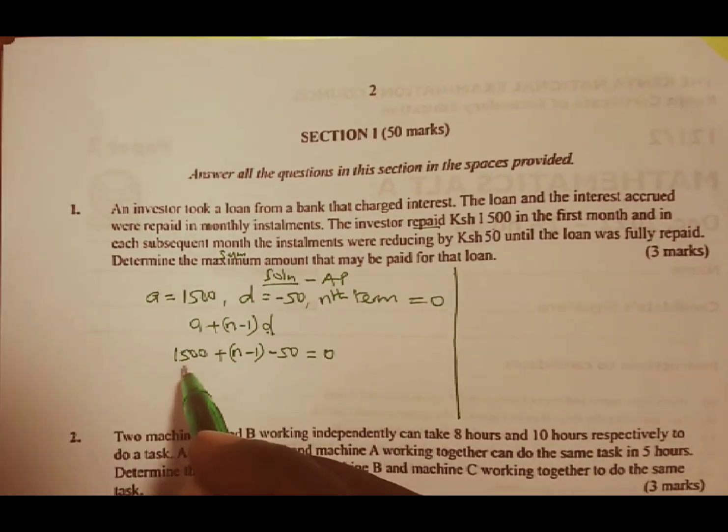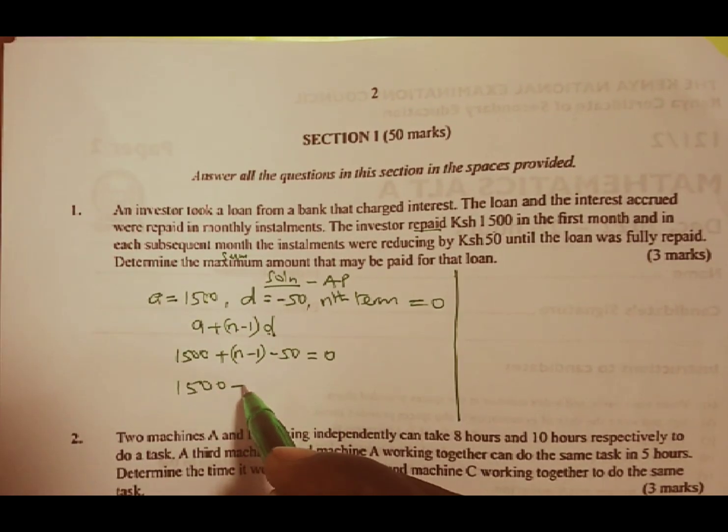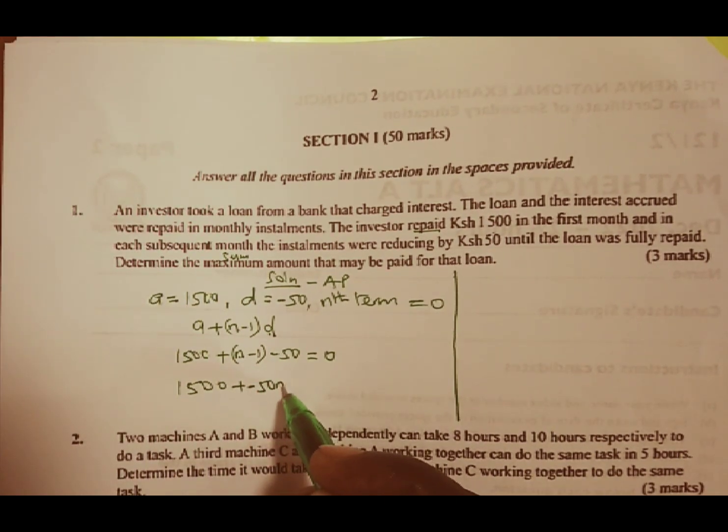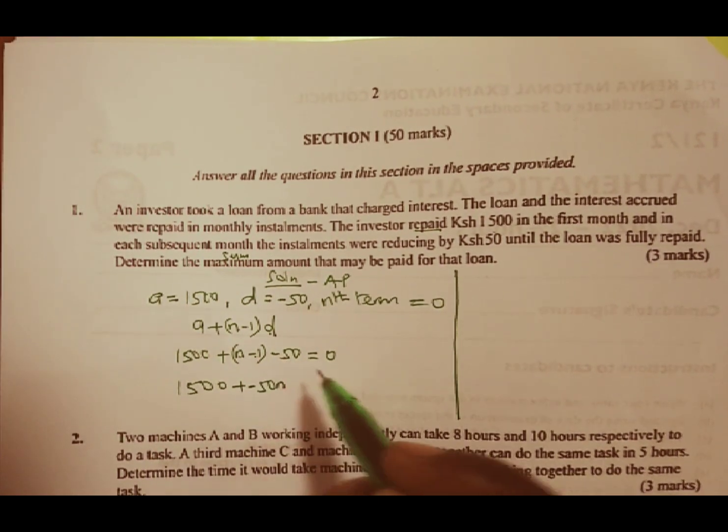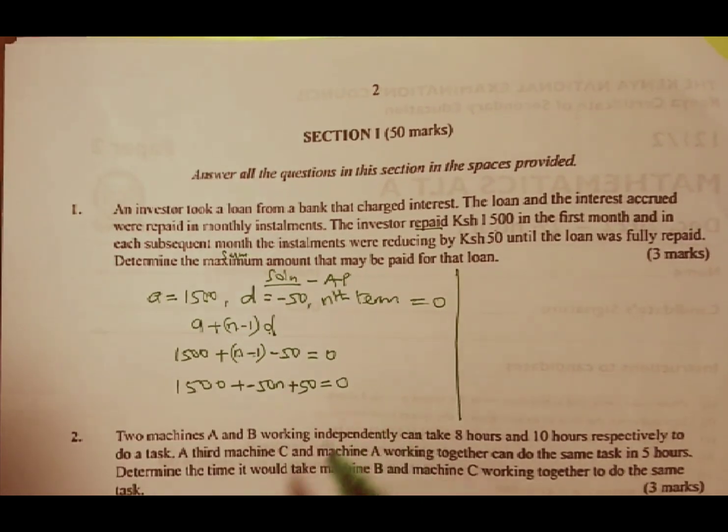We move down. We are going to have 1500 plus, we have N multiply by 50, you get negative 50N. Then negative 1 times negative 50, you get positive 50 being equal to 0.